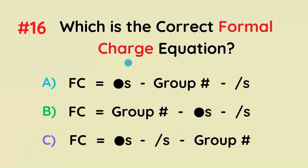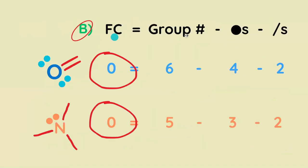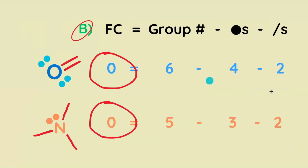Which of these is the correct formal charge equation? It's going to be group number minus number of dots minus number of sticks. For example, oxygen is in group six, it's got four dots, it's got two sticks. Six minus four minus two is zero.